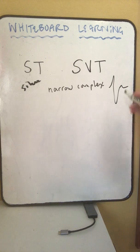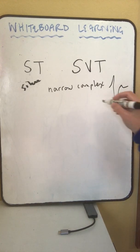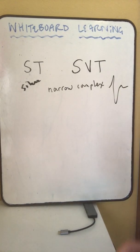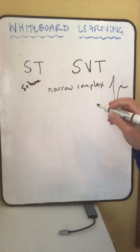If you also have a wide complex, you might have a bundle branch block, and that is what can be a little bit hard about SVT sometimes.